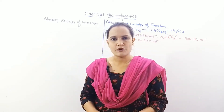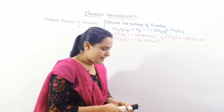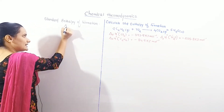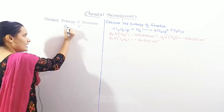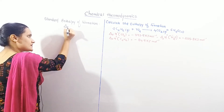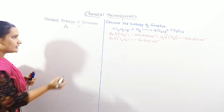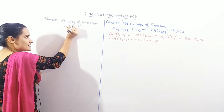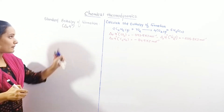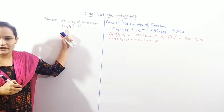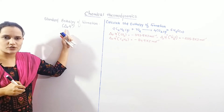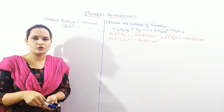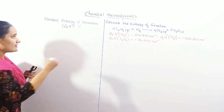The standard enthalpy of formation is represented as delta_f H naught — where 'f' is written in small letter and H naught follows. Whenever you see this notation, it indicates standard enthalpy of formation.